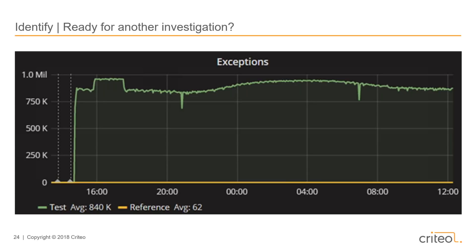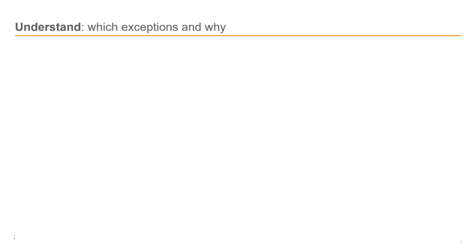The application was working properly. In fact, it took us more than one day to notice that there was something going on. And except a slight increase in CPU usage and of course the number of first chance exceptions, there was really no noticeable impact whatsoever. So the next step would be to take a look at the logs. Obviously, with 10,000 exceptions per second, we expect to find something in the logs. And surprisingly, we couldn't find anything in any of the logs. That's the first part of the mystery.